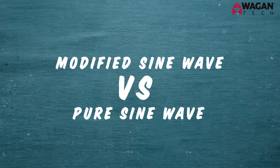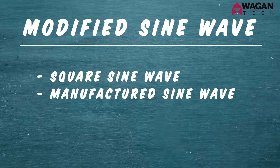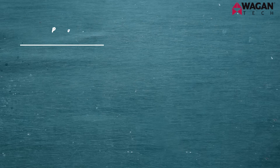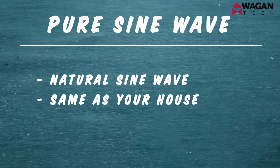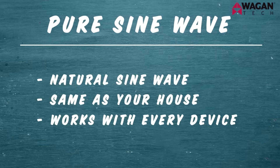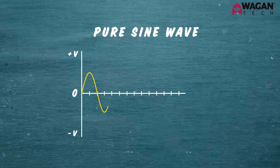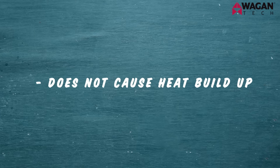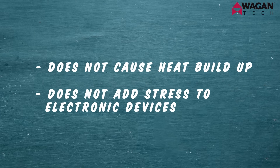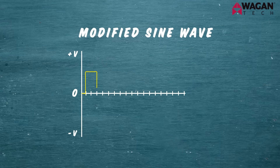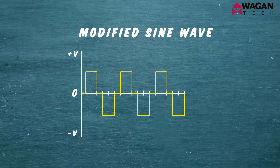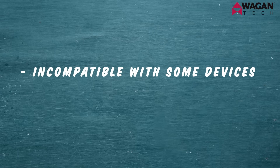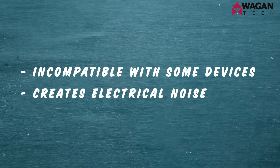Now let's take a look at the different types of sine waves. You have modified and pure sine wave. Modified, also known as square sine waves, are manufactured sine waves that work with most devices. Pure sine wave, or natural sine, is the same sine wave that comes out of the outlet in your house and works with every device. Pure sine wave is ideal because the voltage rises and falls smoothly and changes polarity instantly when the voltage crosses zero volts — this does not cause excessive heat buildup or add stress to electronic devices. Modified sine wave is more like a light switch, with abrupt voltage rises and falls and long periods of rest at zero volts. This abrupt change causes some devices to simply not operate and can also create electrical noise.